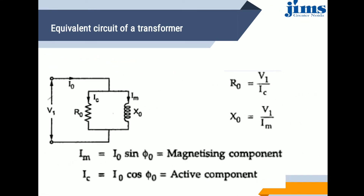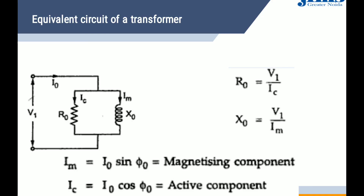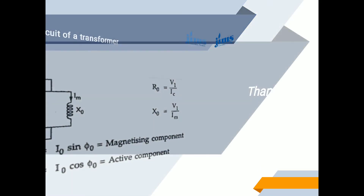This is the equivalent circuit of the transformer referred to the primary side, showing V1, I1, R0, Ic, Im, and X0. R0 = V1 / Ic, and X0 = V1 / Im. Here, Im = I0·sin φ0 is the magnetizing component, and Ic = I0·cos φ0 is the active component.